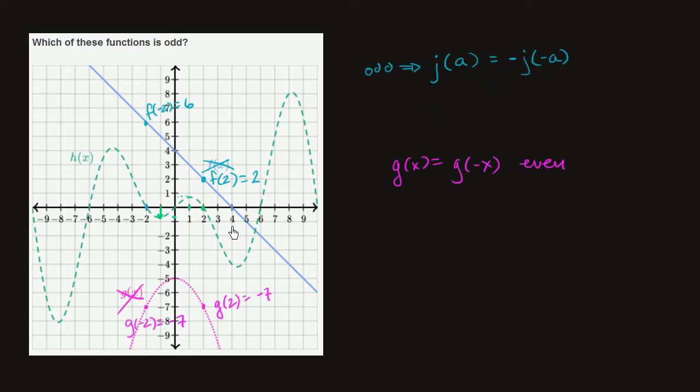If we go to, say, h of 4, h of 4 is this negative number. And h of negative 4 seems to be a positive number of the same magnitude. So once again, this is the negative of this. So it looks like this is indeed an odd function.